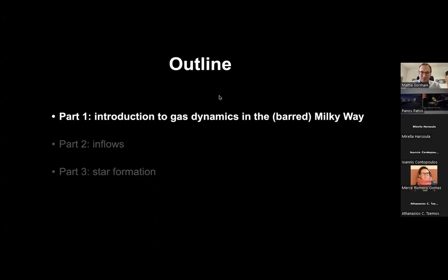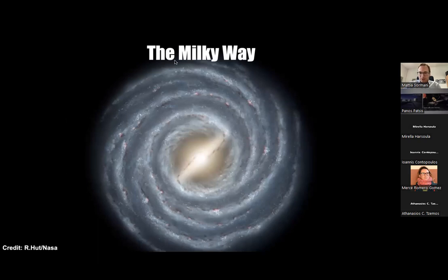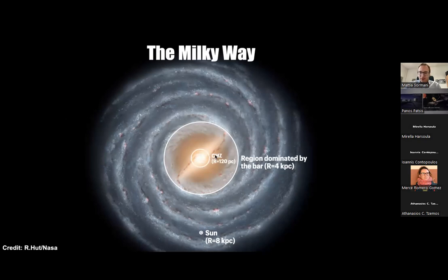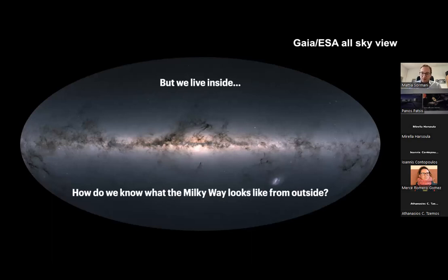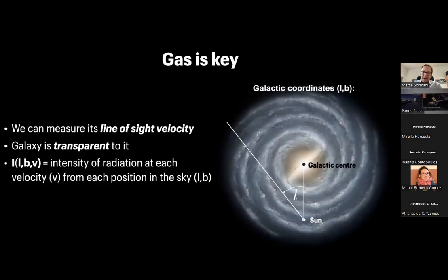This is the usual drawing of the Milky Way. The Sun is at eight kiloparsecs from the center. The region dominated by the bar is the innermost four kiloparsecs roughly. Inside you have the central molecular zone with a radius of about 120 parsecs, and at the very center you have the black hole Sagittarius A*. Since we live inside the Milky Way, the gas is key for understanding its structure — we can measure line-of-sight velocity.